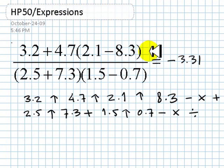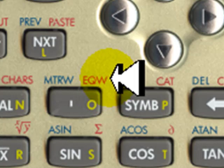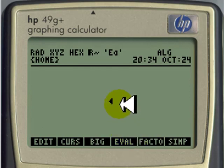There is another way of evaluating that expression. I can type the expression with the equation writer. Equation writer in red, up here, on top of the apostrophe key. Click on equation writer, and you are ready to write 3.2 plus 4.7.